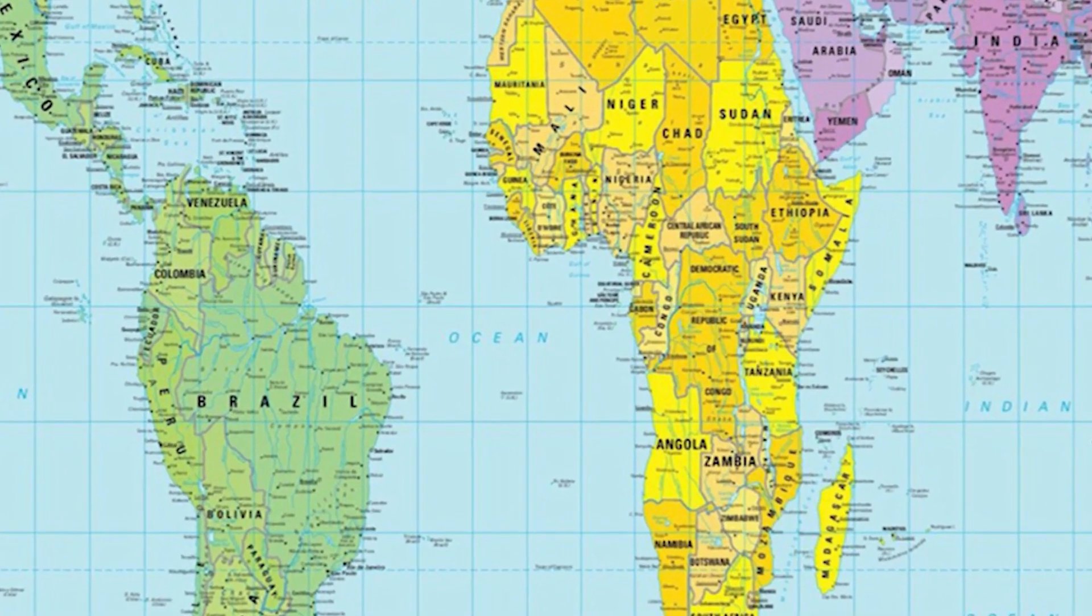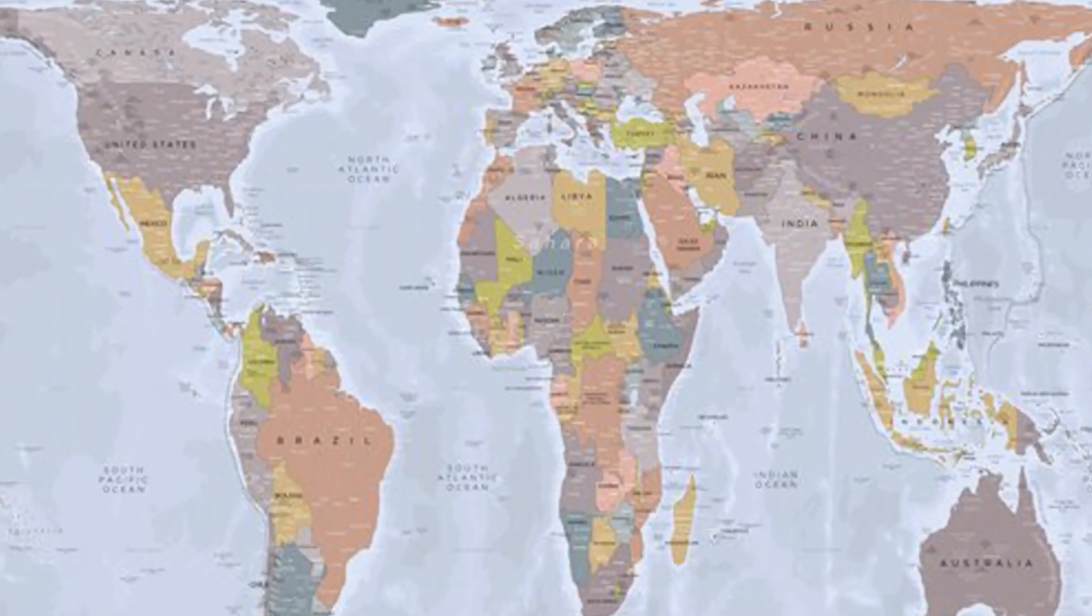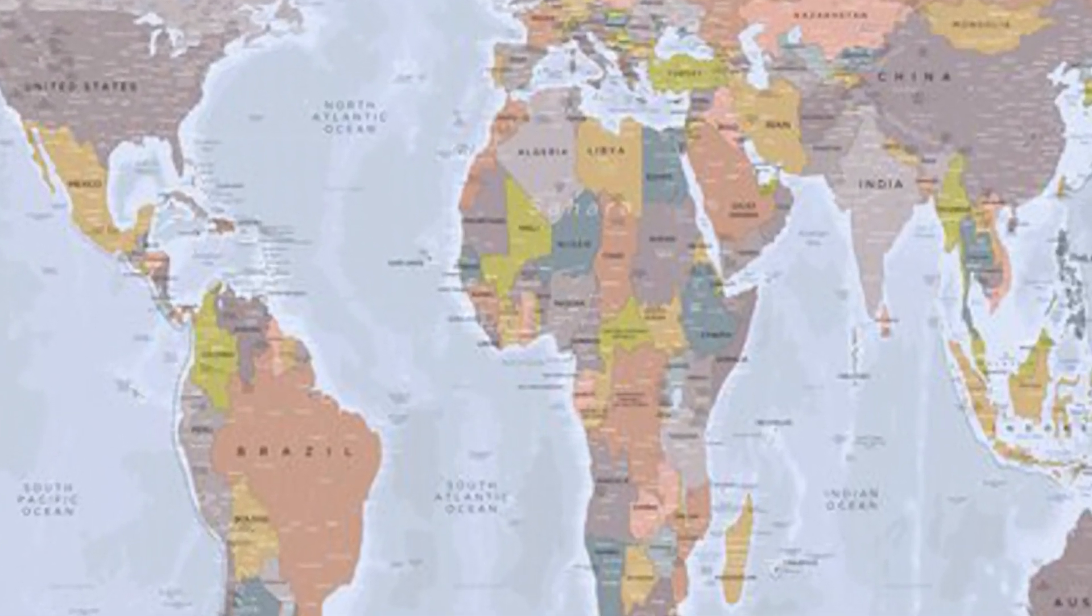In the 1970s and 80s, there was another option known as the Gall-Peters Projection, in which countries were given equal areas on the map relative to each other.